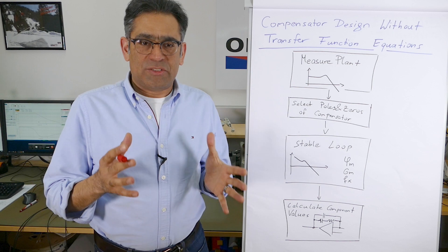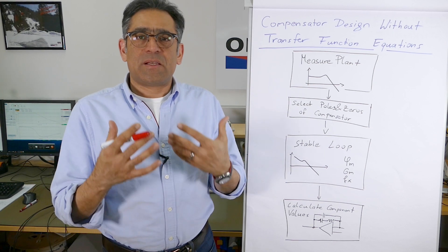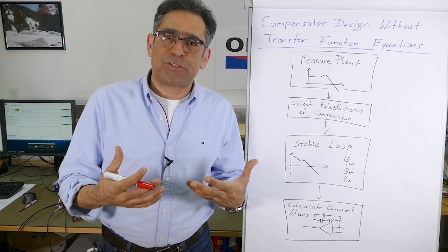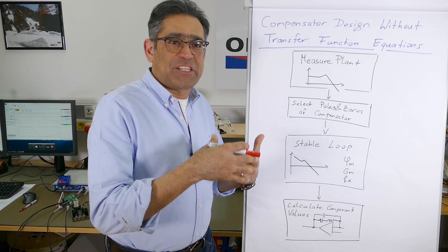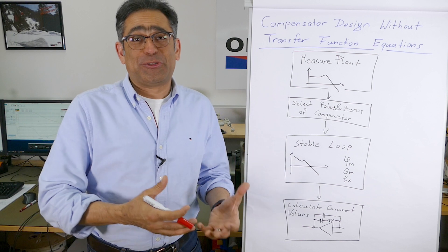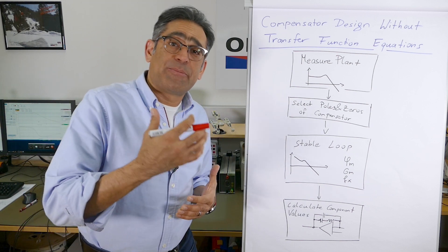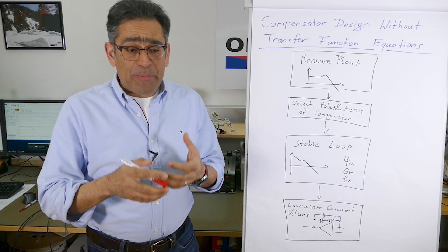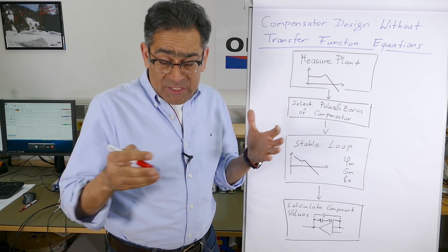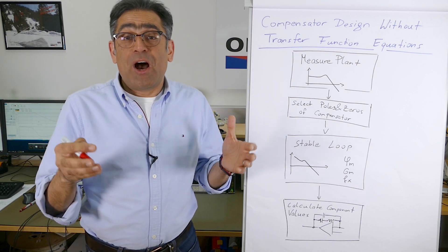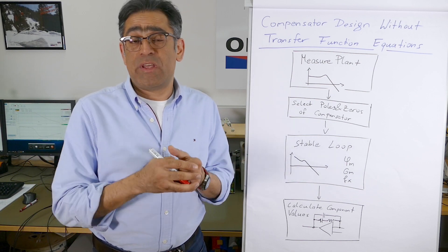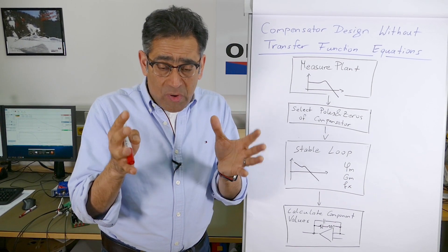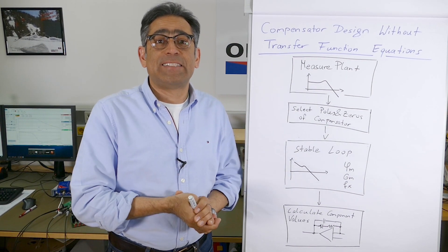Typically when we try to stabilize a power supply and design a compensator, we start with a mathematical model or the transfer function. After we've got the transfer function, we get the mathematical model of the compensator and place the poles and zeros to meet stability criteria. The problem with this is that the transfer function is often either not completely known, there's too much uncertainty, or the mathematical equations do not actually fit reality.